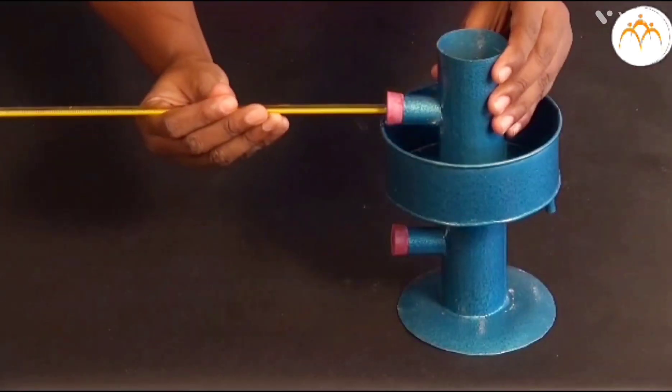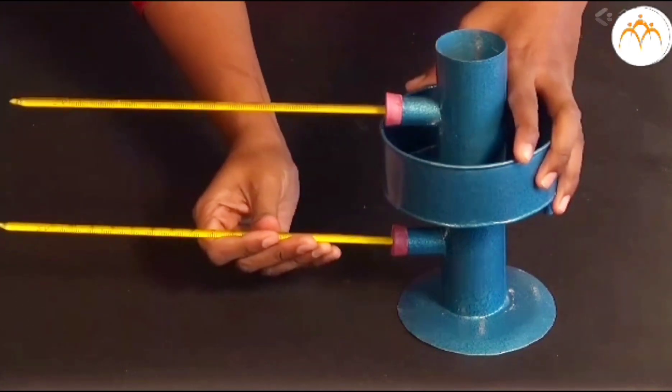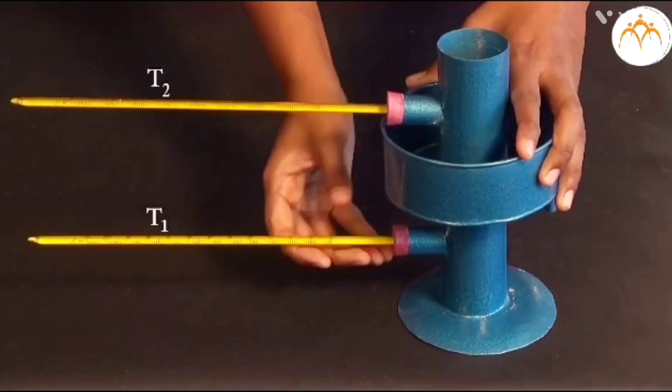In procedure, we take the Hobbes apparatus and fix two thermometers: T1 as the lower one and T2 as the upper part.